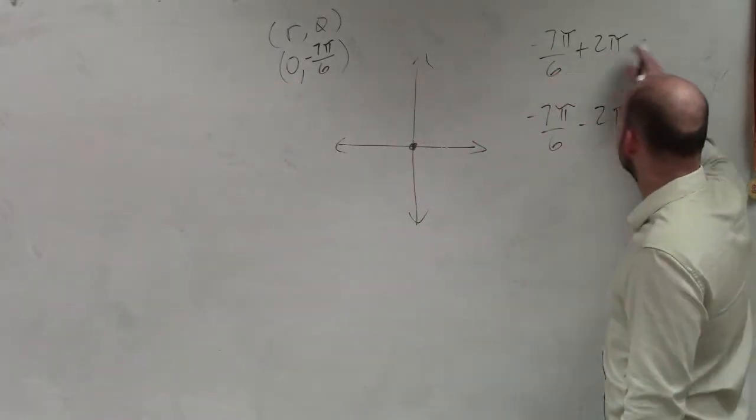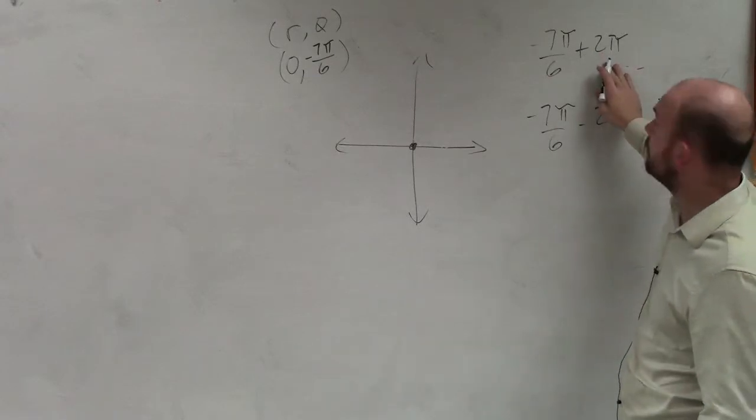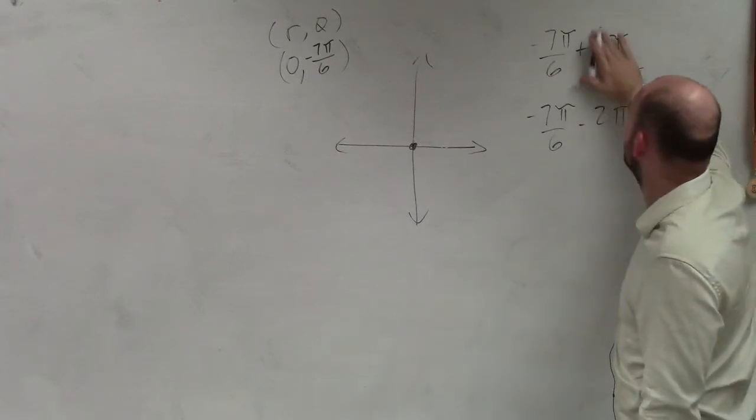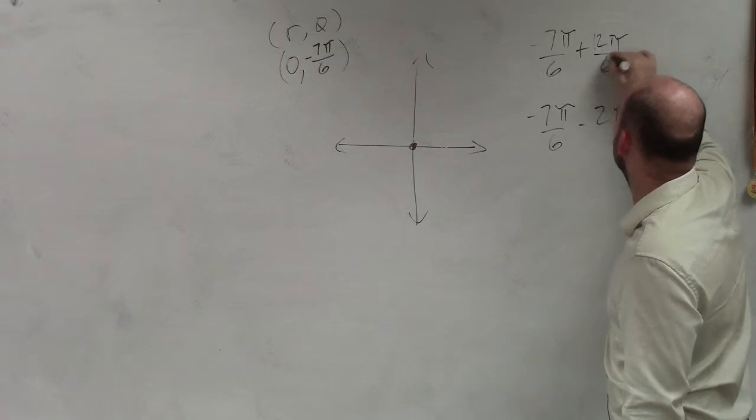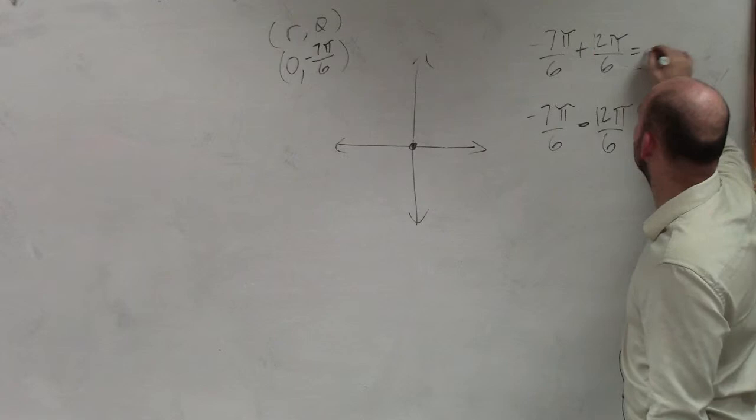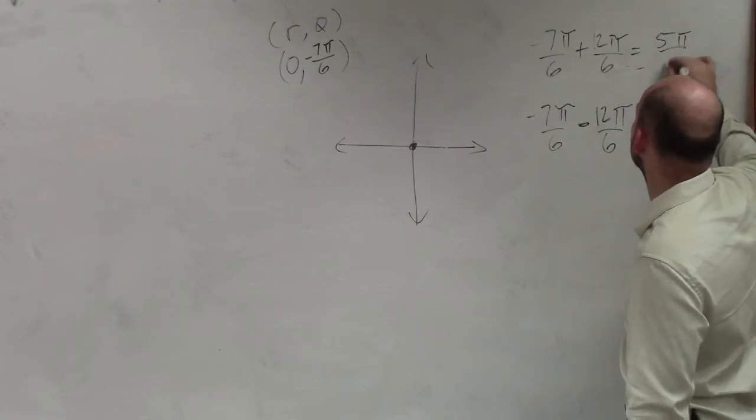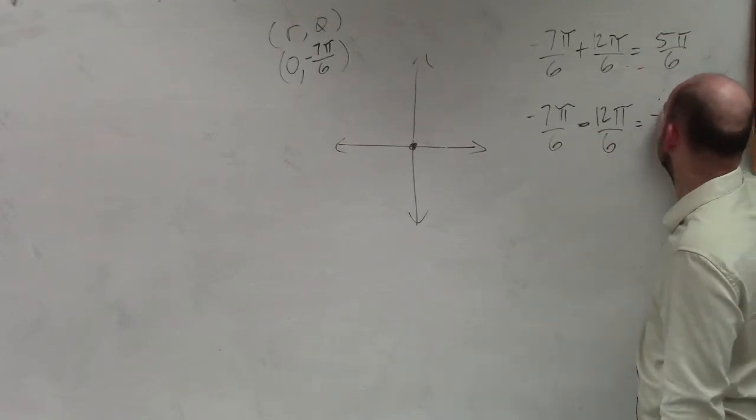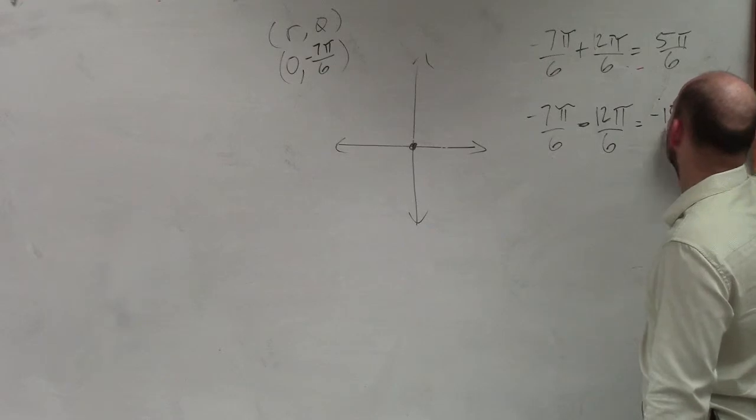So I'm going to rewrite 2 pi. Is it OK if I rewrite 2 pi as 12 over 6? Then I just simply go ahead and add these. So that's 5 pi over 6. And this one is going to be negative 19 pi over 6.